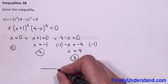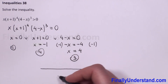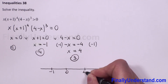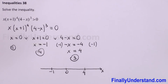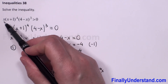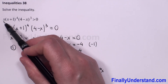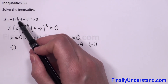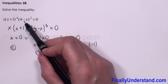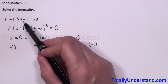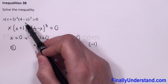Now we can draw the number line and place our roots: negative 1, 0, and 4. We have to determine the sign of the coefficient of the variable with the highest power. The first x is positive; in the second parenthesis, x is positive to the fourth power, still positive; and in the third parenthesis we have negative x.